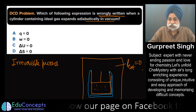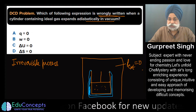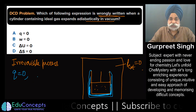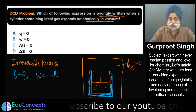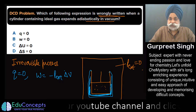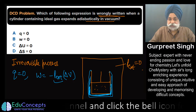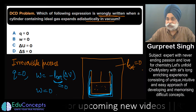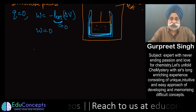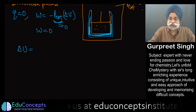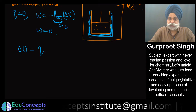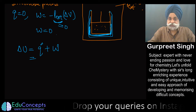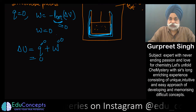Since the process is adiabatic, the walls of the container are insulated and will not exchange any heat with the surroundings, so q = 0 for sure. Work we know is P_external × ΔV — although there is a change in volume, P_external is zero, so work becomes zero. Therefore ΔU, which is the change in internal energy, is the sum of heat and work, so ΔU = 0 as well.